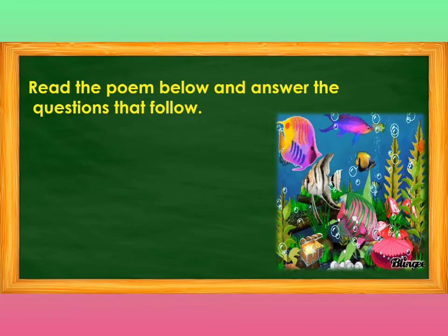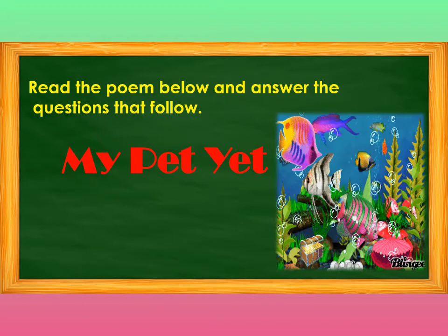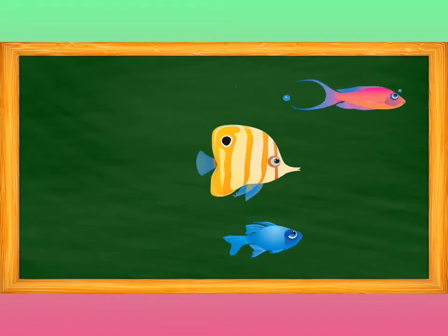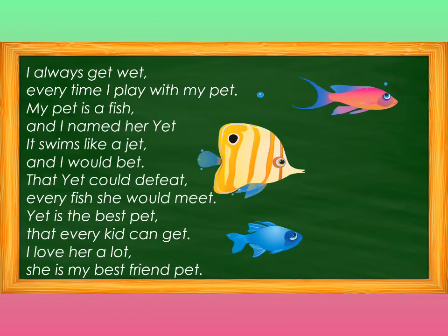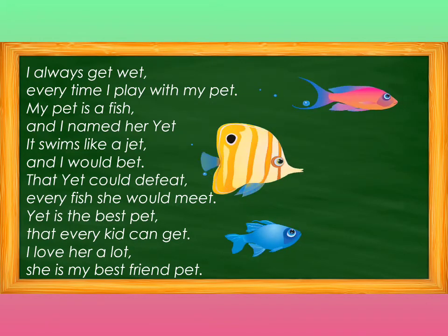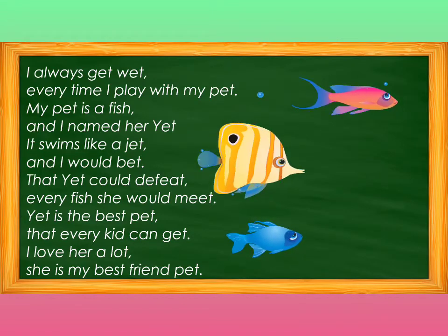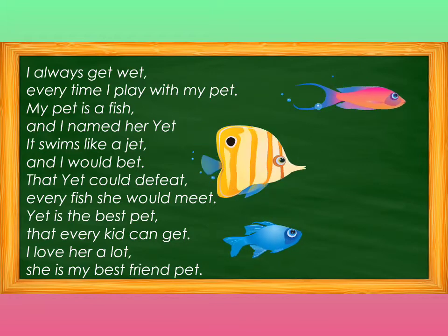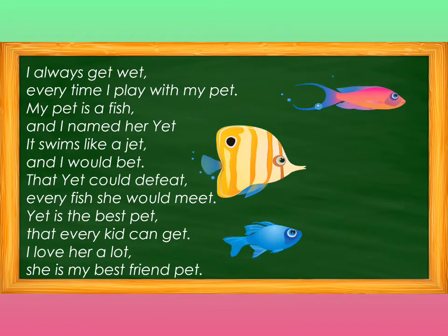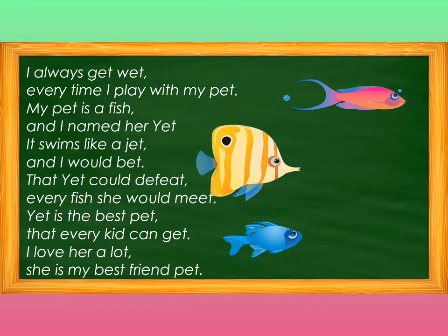Let us read another poem and answer the questions that follow. 'My Pet Yet' by Junray C. Colat. I always get wet every time I play with my pet. My pet is a fish and I name her Yet. It swims like a jet, and I would bet that Yet could defeat every fish she would meet. Yet is the best pet that every kid can get. I love her a lot. She is my best friend pet.